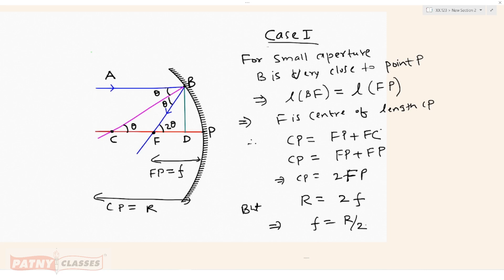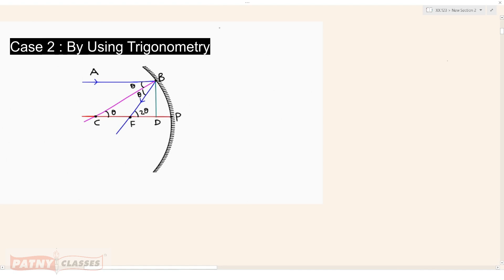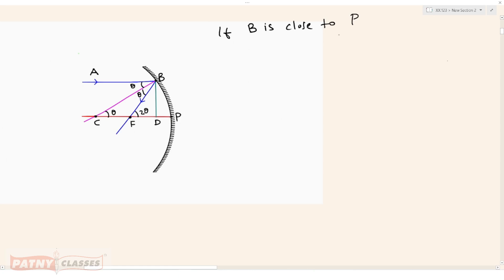Now we can prove the same relationship by using trigonometry. When B is close to P, the pole of the mirror, then length CB equals length CP, and length FD equals length FP.